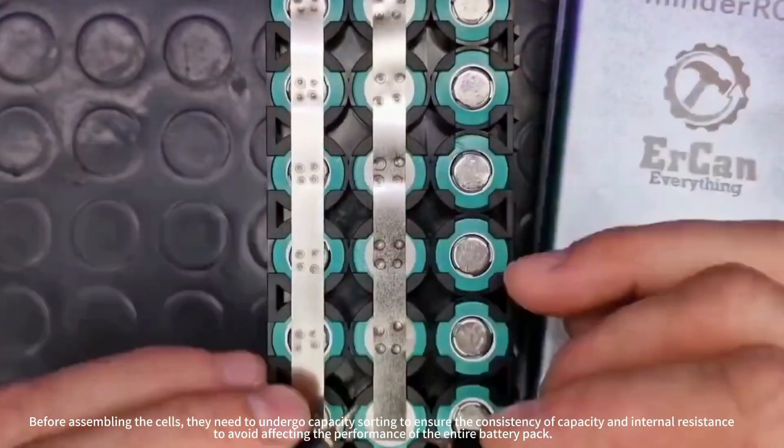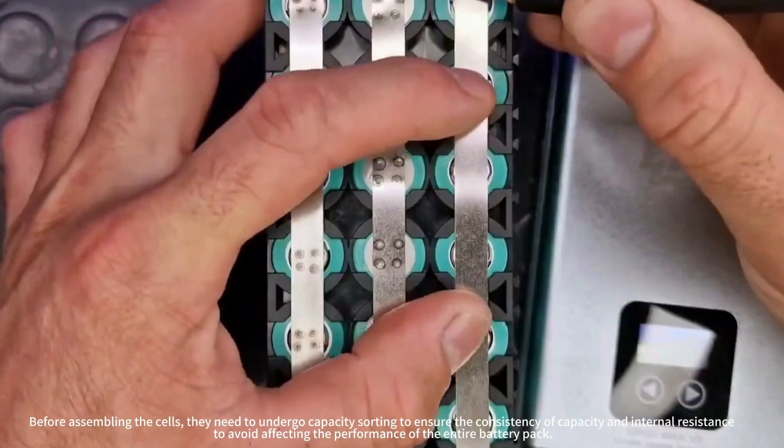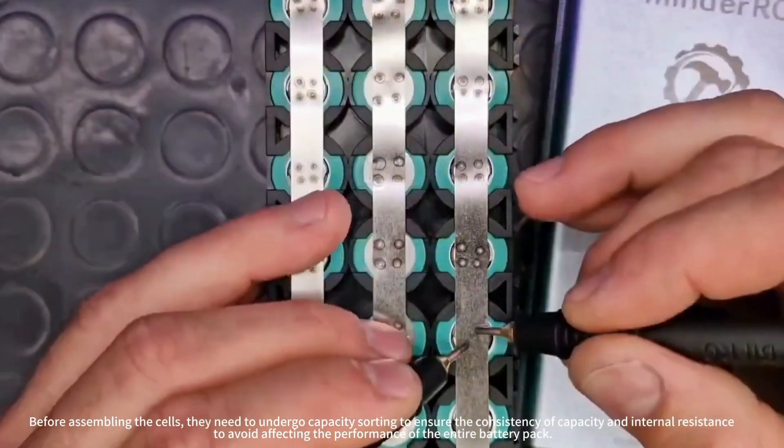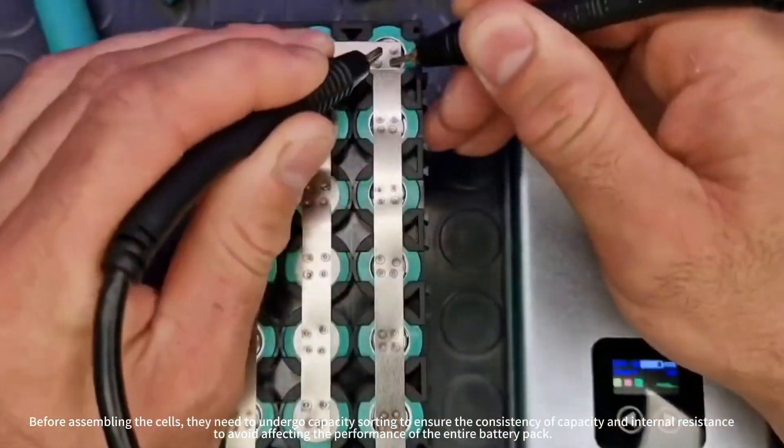Before assembling the cells, they need to undergo capacity sorting to ensure the consistency of capacity and internal resistance, to avoid affecting the performance of the entire battery pack.